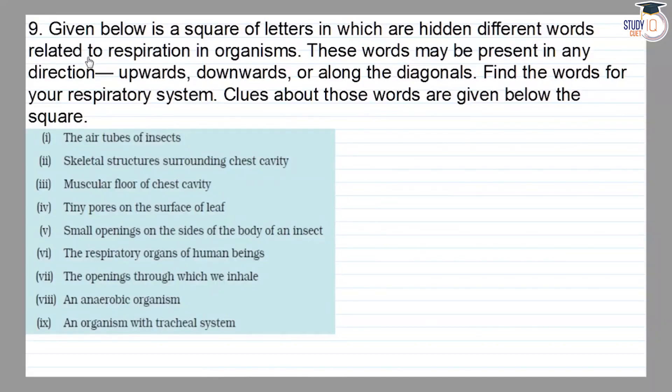Last NCERT Chapter 10, Question 9. Given below is a square of letters in which are hidden different words related to respiration in organisms. These words may be present in any direction.